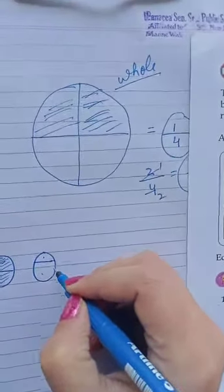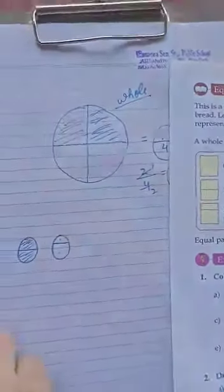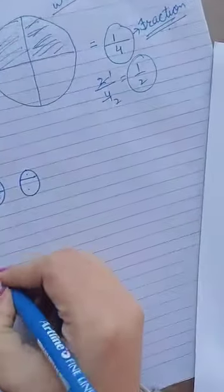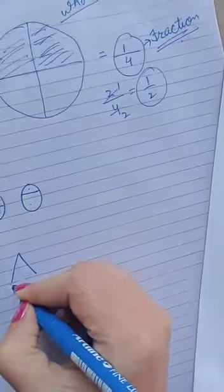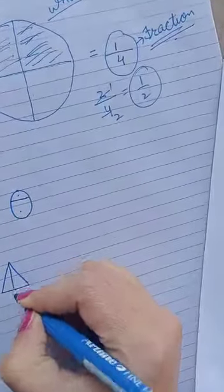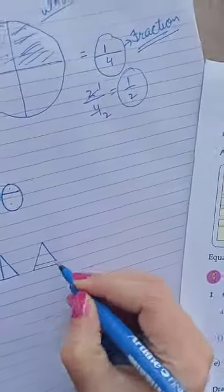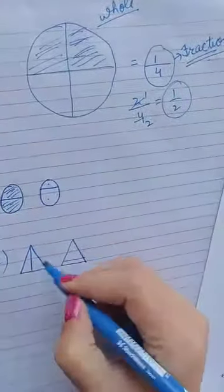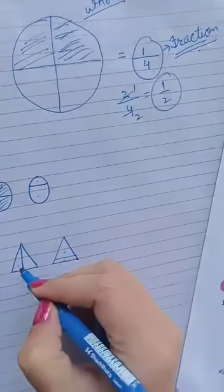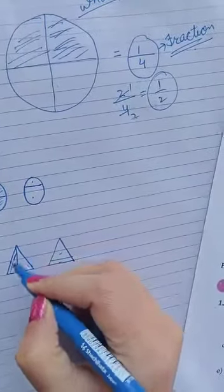Now in the next part, see, a triangle is given to you. In this, see, this one is smaller and this one is bigger. But in this one, both are equal, so color this. Similarly, do all the parts of this question.